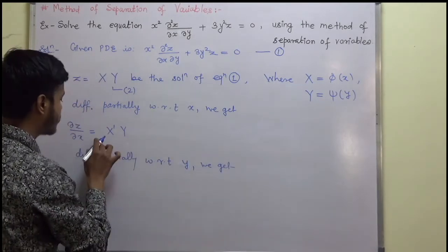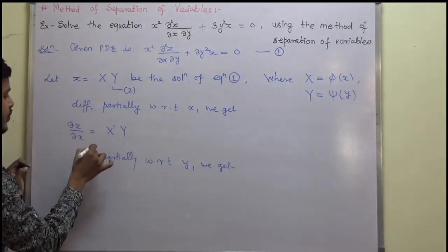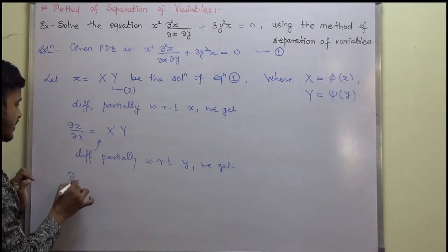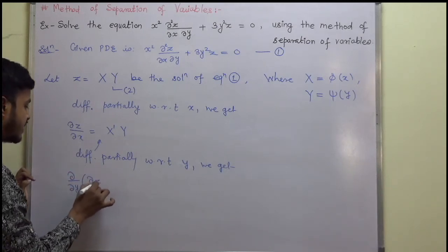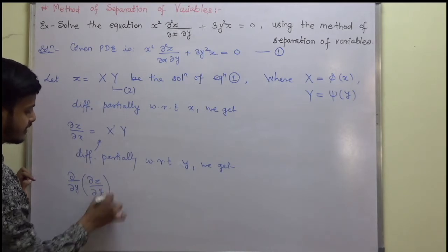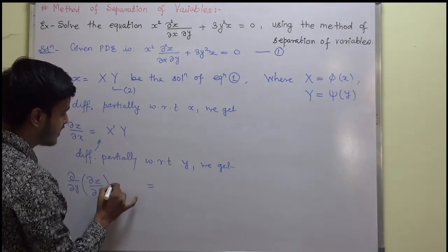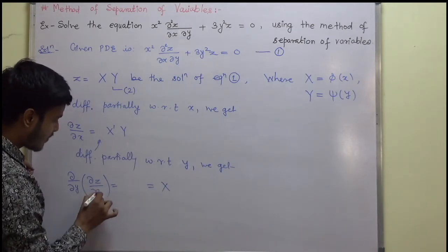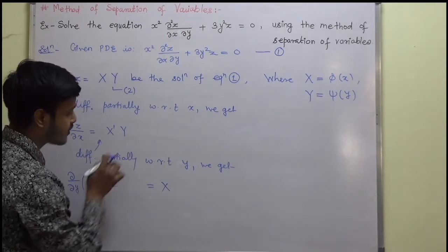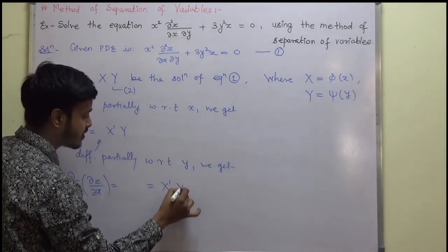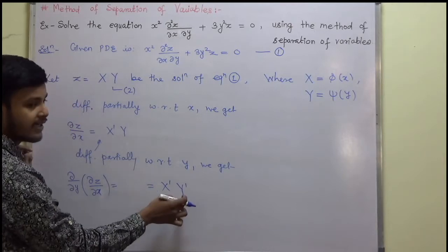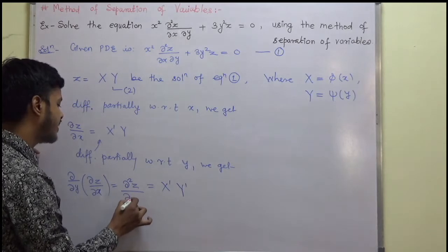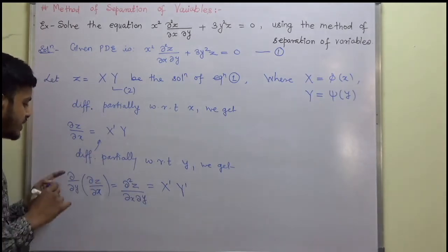We want del²z/del x del y, so we differentiate del z/del x again, this time partially with respect to y. We get del/del y of (del z/del x) = X' · Y', since X' is treated as constant and the derivative of Y with respect to y is Y'. So del²z/del x del y = X'Y'.